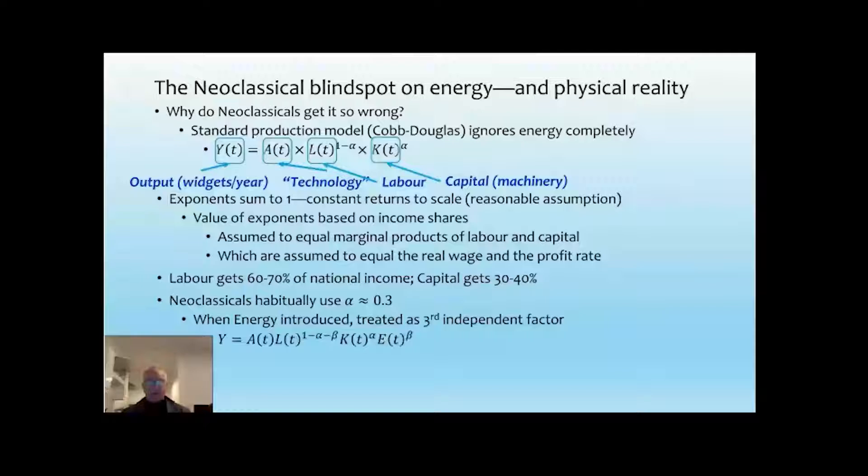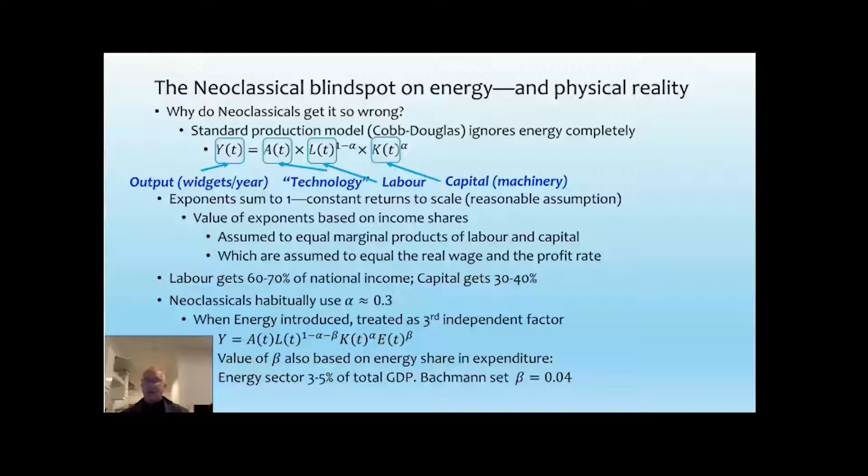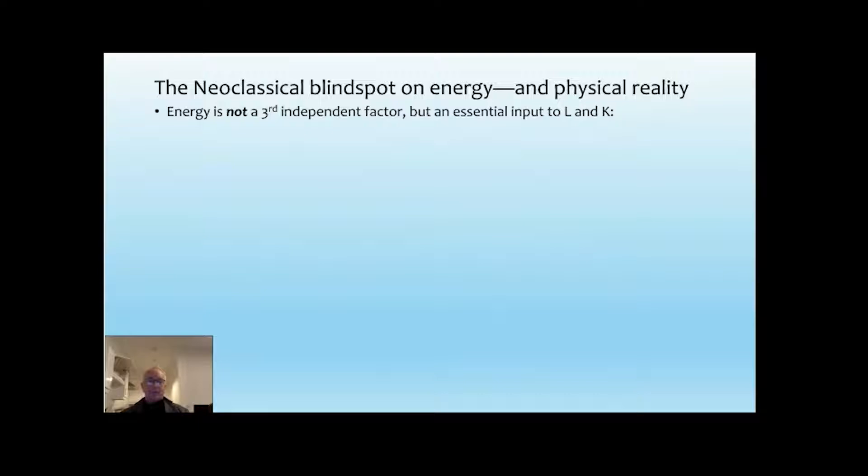Now, when they bring in energy, it's a third factor. So they now expand to A times L times K times E, where the coefficients again sum to one. And the value they give to beta, again, is based on the share of energy in total GDP, which is between 3 and 5% of GDP. So Bachmann used beta equals 0.04 in his model. But energy is not an independent third factor. It's an essential input to labour and capital, without which they can do no work. So rather than having L times K times E, you have L with E as an input and K with E as an input. And therefore you get rid, the beta term disappears. And this is an important variation, even if you stick inside a Cobb-Douglas production function, which of course I'm not going to do, but just to show why they're wrong here.